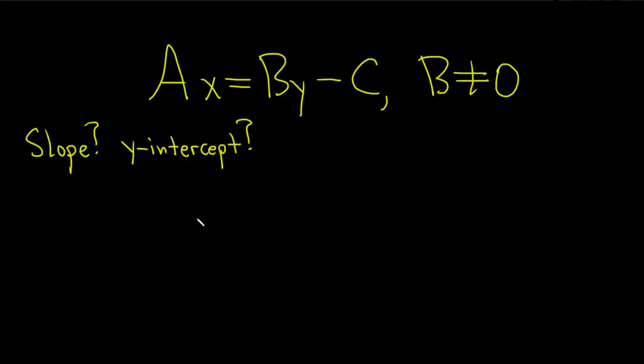In this problem, we're given the equation of a line, AX equals BY minus C, where B is not equal to 0. We're asked to find the slope and the y-intercept. To do that, we're going to solve this for Y and write it in the form Y equals MX plus B. Once we do that, we know that M is the slope and B is the y-intercept.